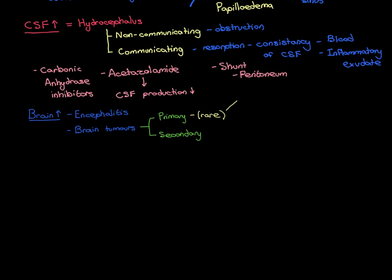Most primary brain tumours are what we call gliomas. It's believed that around 50% of primary brain tumours are of this type. Again, primary brain tumours are extremely rare overall, but within this collection of rare tumours, the most common type is the glioma.